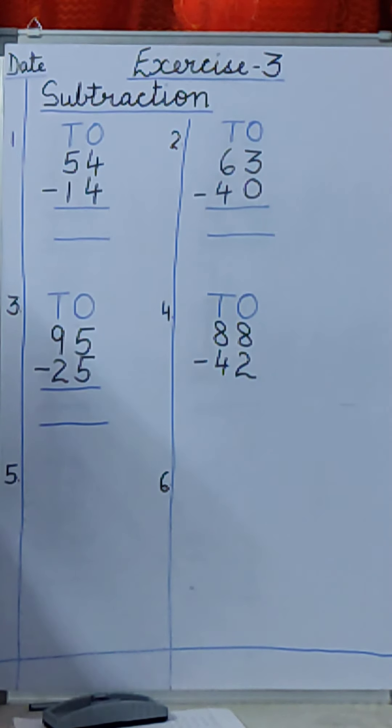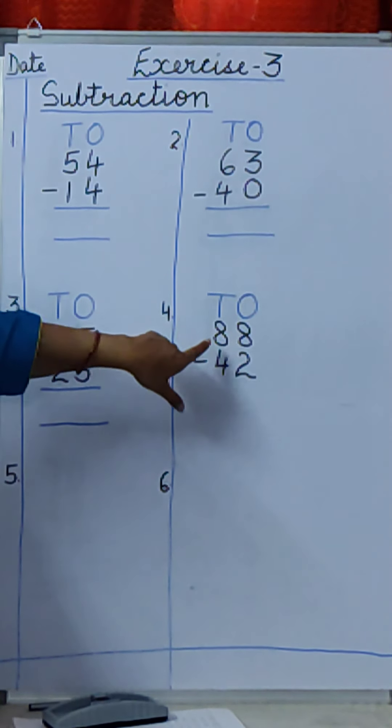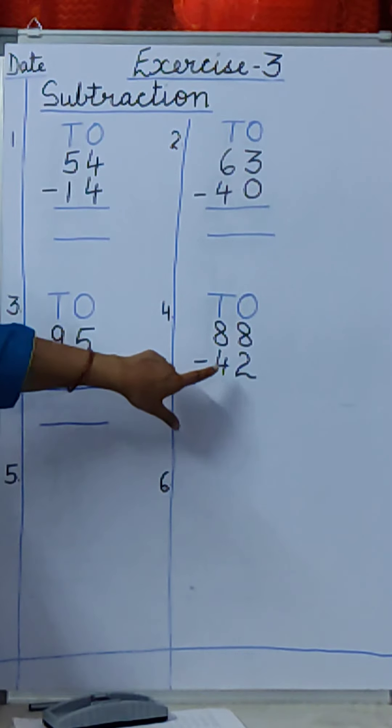Then the fourth one is. Again under T.O. you will write 88 minus 42.